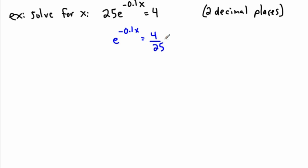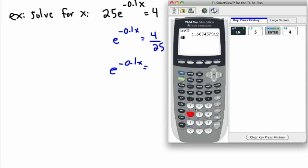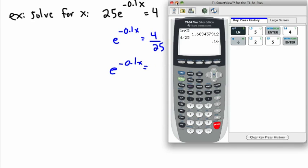4 divided by 25 is 0.16 — you can always check that on your calculator. So I can rewrite this as e to the minus 0.1x equals 0.16.